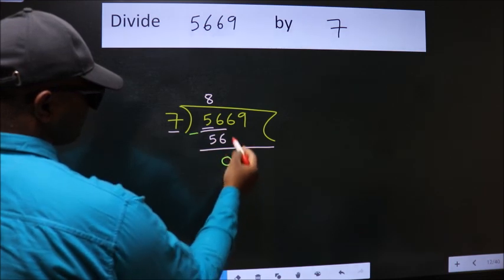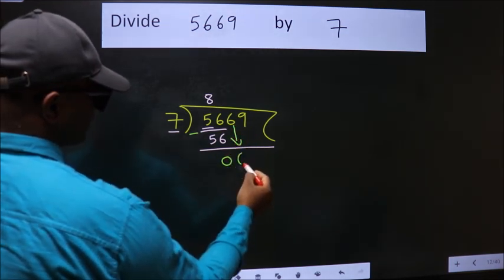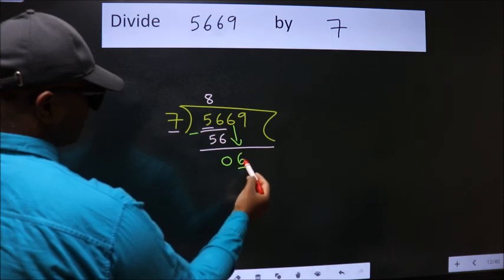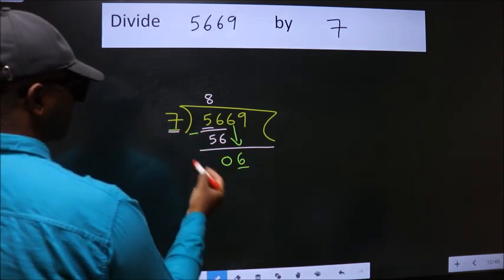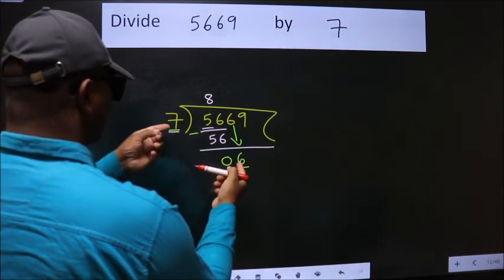After this, bring down the beside number, so 6 down. Here we have 6. 6 is smaller than 7.